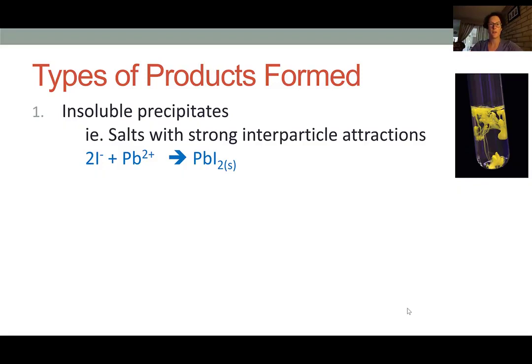And a good example is lead iodide. If we combine a soluble iodide solution, for instance potassium iodide, with a soluble lead solution, let's say lead nitrate, once a lead ion has an opportunity to bang into an iodide ion, they will form lead iodide, which is this yellow-colored solid shown on the right.